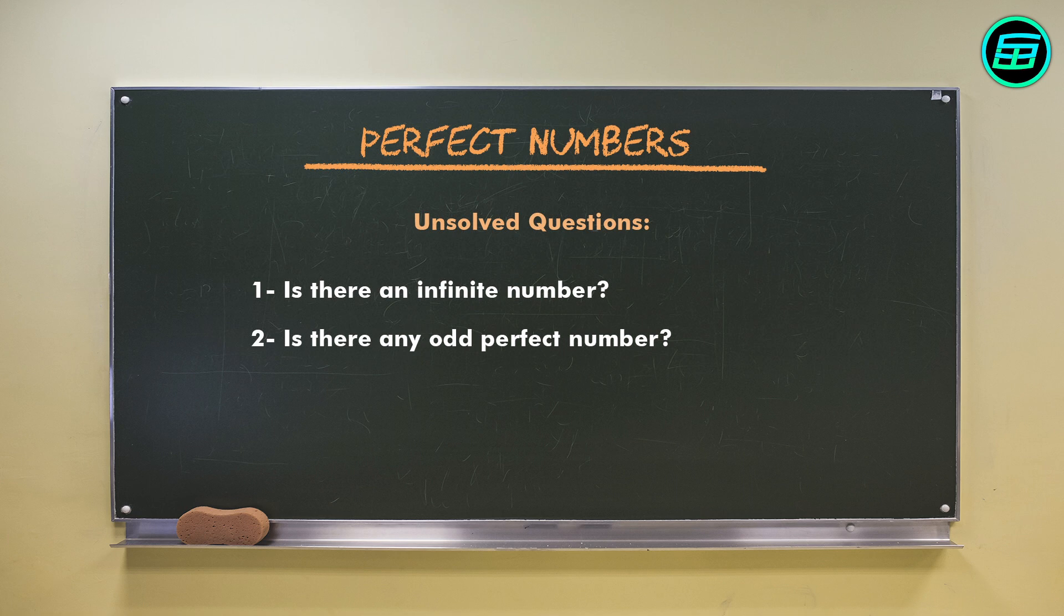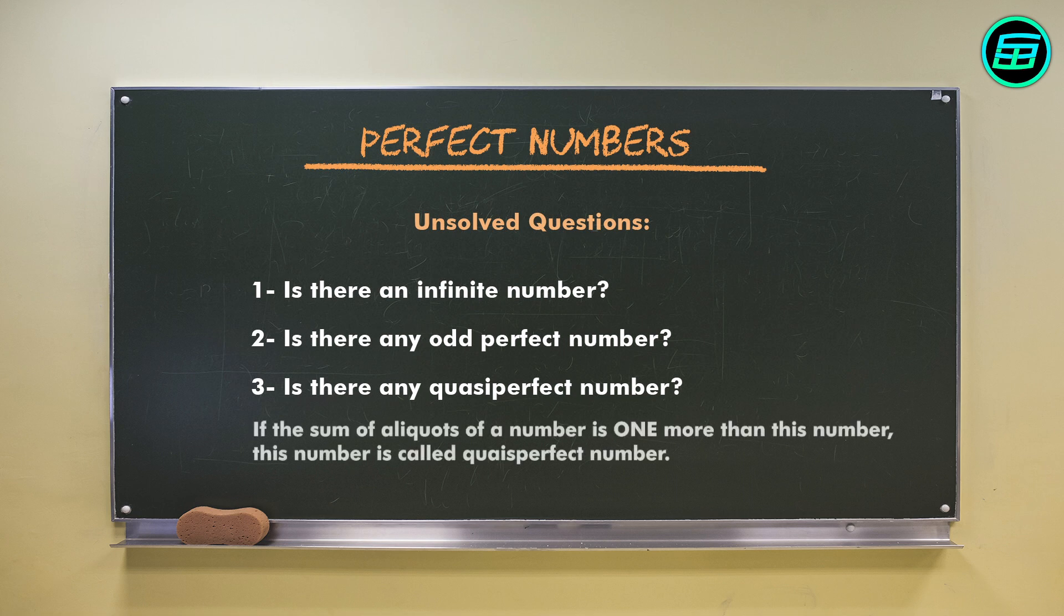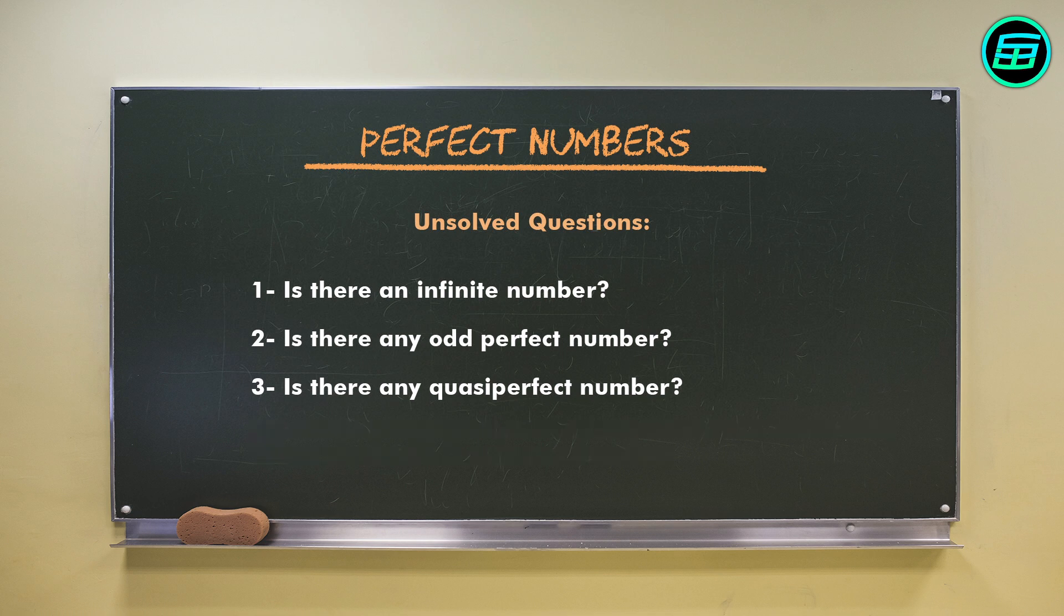Another unsolved question concerns quasi-perfect numbers. A quasi-perfect number would be a number n whose divisors, excluding itself, sum to n plus 1. But it isn't known if such a number exists. According to recent research, if a quasi-perfect number does exist, it must be greater than 10 to the 35.